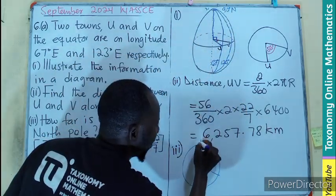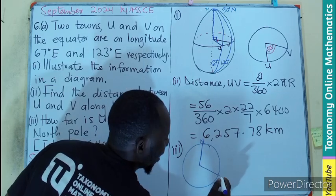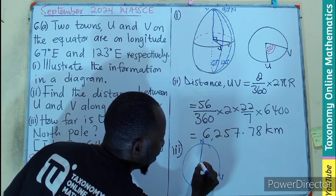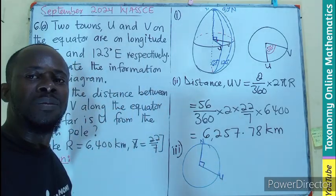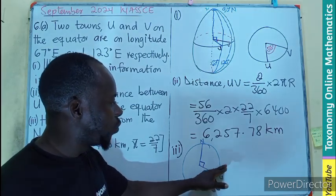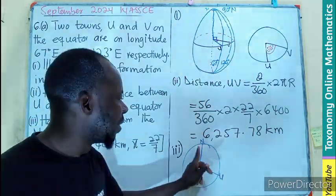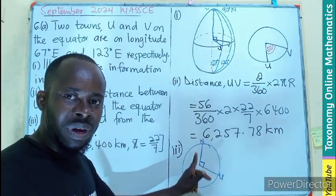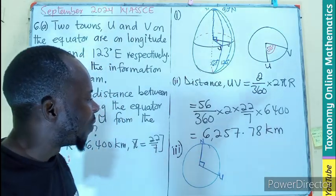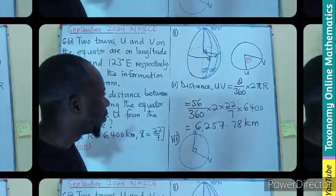So we have N and U, the angle will be 90 degrees. So how far is U from N? That is what we are looking for, which still becomes the length of the arc. That will still be the length of the arc. So let's put that into a calculation.